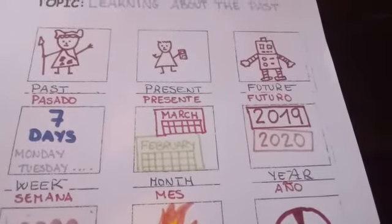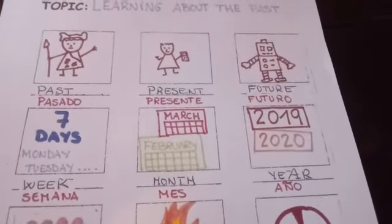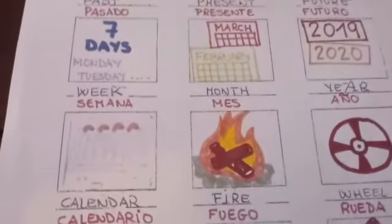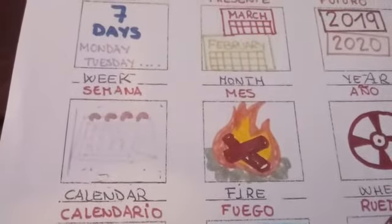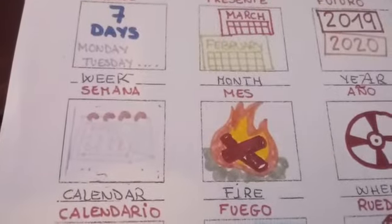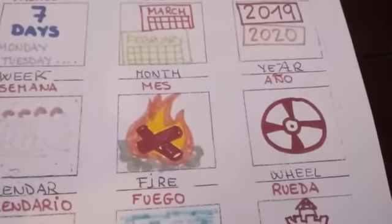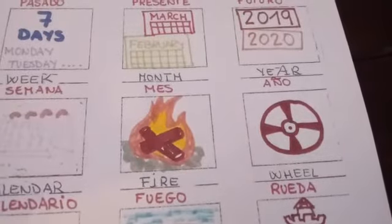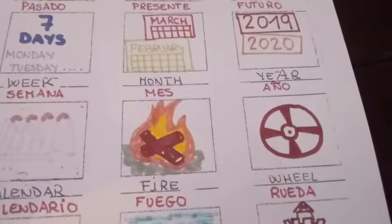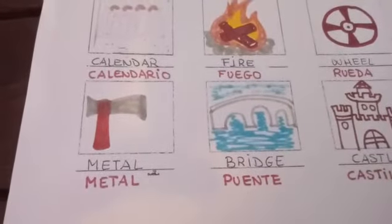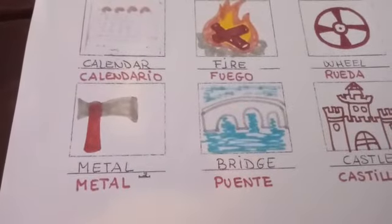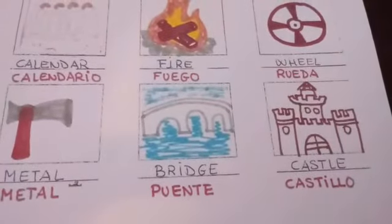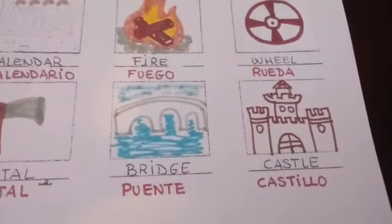Next year, 2021. Then there's the word calendar, which shows the months and the days. And the special words for inventions and discoveries in the past: fire, wheel, metal tools or wooden tools too, bridge, castle and other buildings.